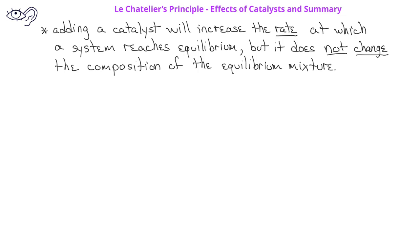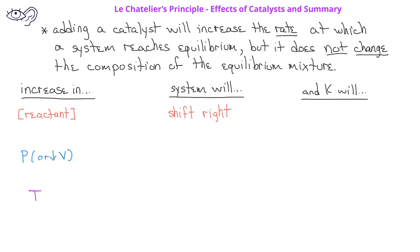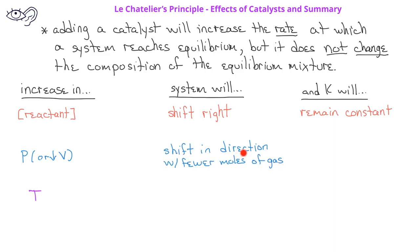Let's summarize everything we've learned based on Le Chatelier's principle. We'll look at an increase in reactant concentration, pressure, or temperature, predict which way the system will shift, and determine the effect on the equilibrium constant. If we increase the reactant concentration, the system will shift to the right and the equilibrium constant will remain constant. If we increase the pressure, the system will shift in the direction of fewer moles of gas, and the equilibrium constant will again remain constant.